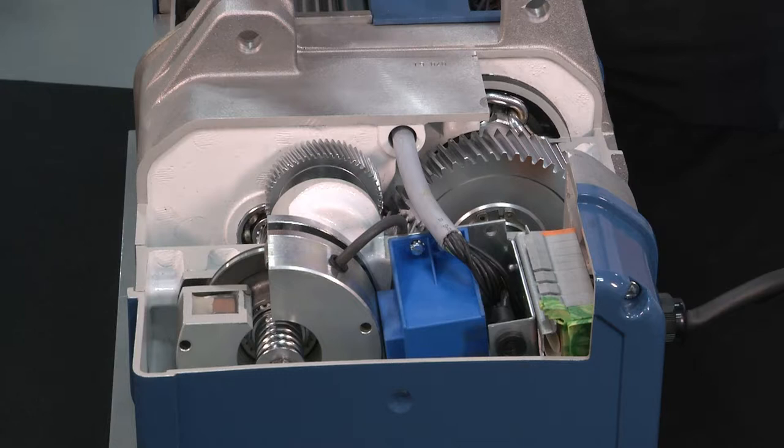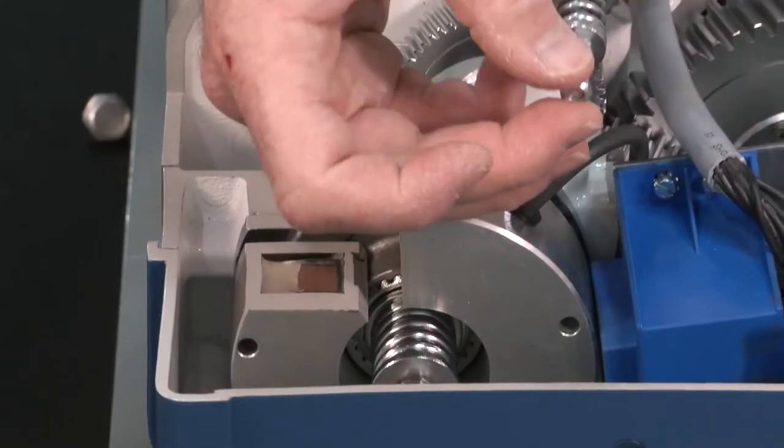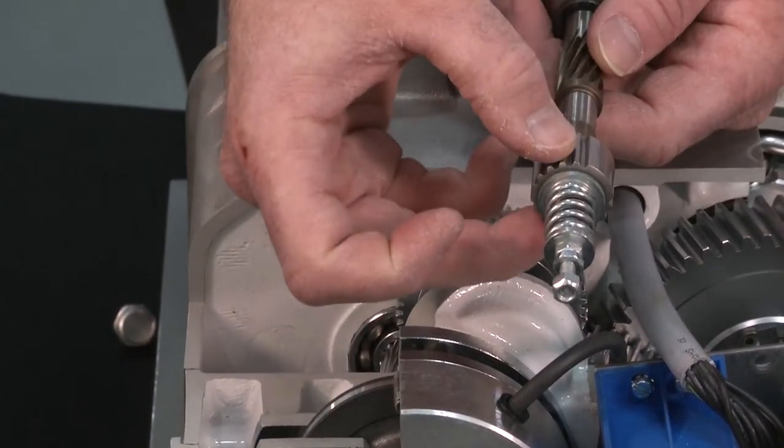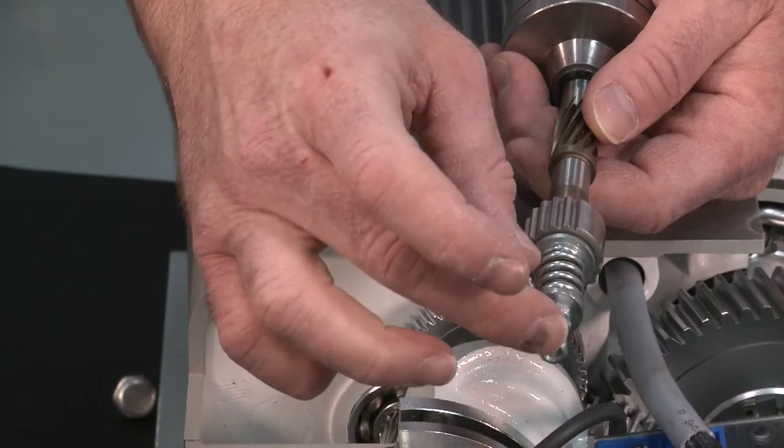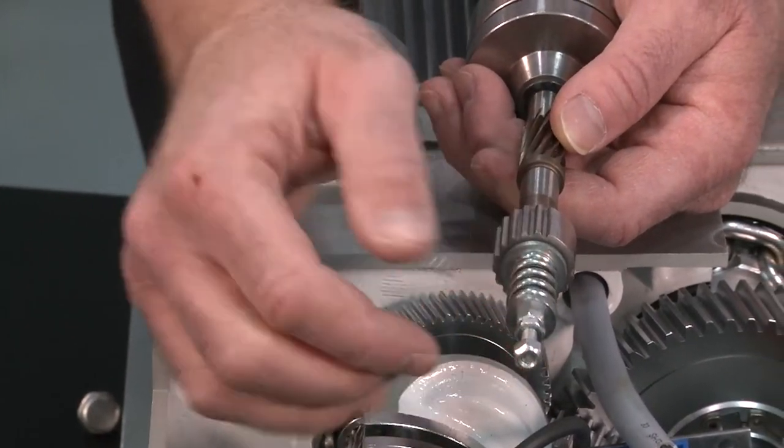What you see forward of the brake is actually the clutch adjustment. We'll talk more about the clutch and the brake system, but this should not be mistaken for the brake adjustment. This is for your clutch.